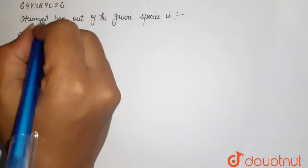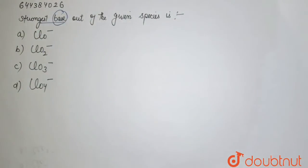So we have to check the base. Your base is the species which is electron rich or it must be stable.